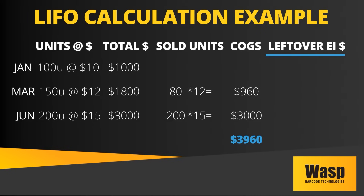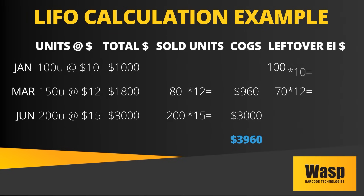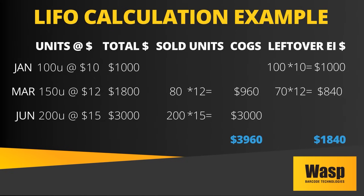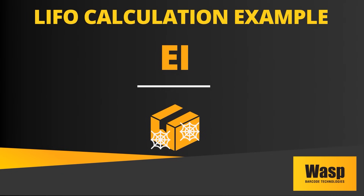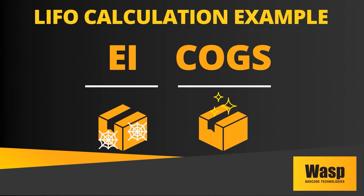Now we can compute the ending inventory. The remaining inventory consists of 70 units from March at $12, and all 100 units from January at $10. Therefore, your ending inventory would be $840 plus $1,000, totaling $1,840. To summarize, with LIFO, the company's ending inventory reflected older cost layers, while cost of goods sold represents the latest purchases, impacting financial statements accordingly.